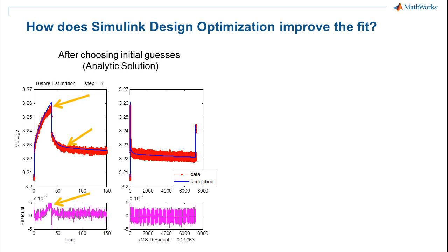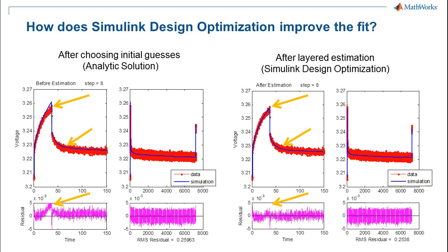However, the analytic solution requires making some approximations, so it's not quite a perfect fit around the pulse itself, and the residual trends to several millivolts of error. After the second pass with Simulink Design Optimization, where we perform the automated estimation, you can see these areas have been cleaned up nicely and the residuals hover around zero.